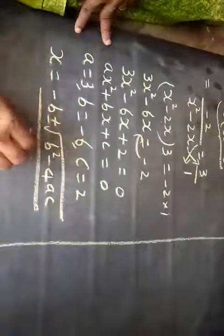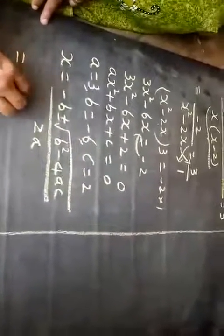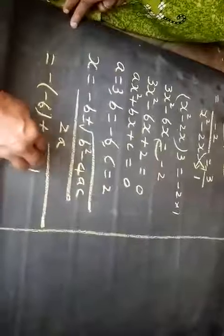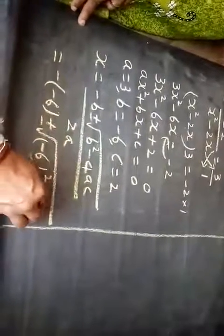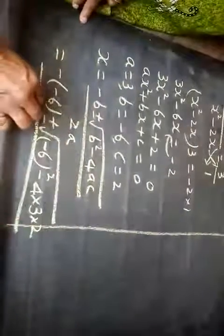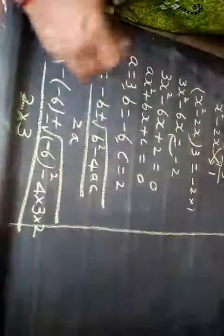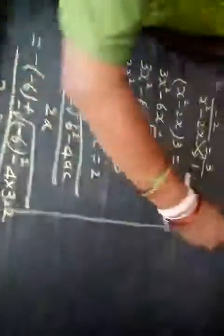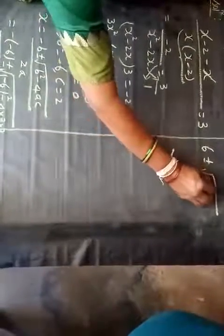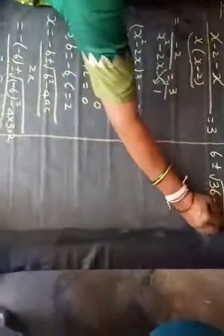Substituting: minus of minus 6 plus or minus under the root of b squared, which means I write minus 6 squared, minus 4 into a which is 3 into c which is 2, whole divided by 2 into a which is 3. Next step: minus into minus becomes plus, so 6 plus or minus root of 36 minus 4 times 3 times 2, divided by 6.